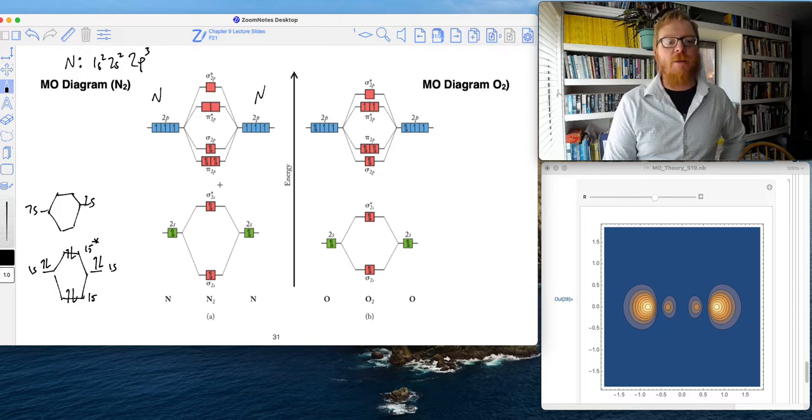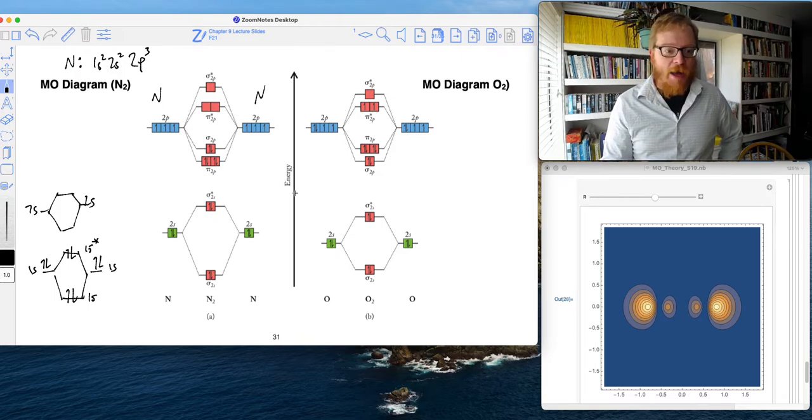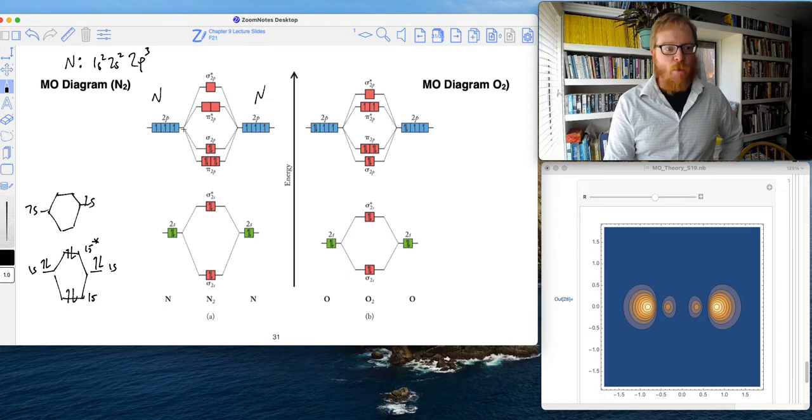And if we go through and now start counting up all of our bonds, check it out. We end up with 6 electrons to distribute in this top level: 1, 2, 3, 4, 5, 6.